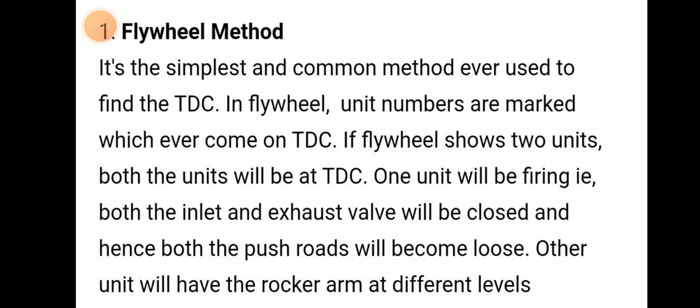The first is the flywheel method. This is the simplest and most common method used to find TDC. In the flywheel, the unit numbers are marked. Whichever unit number comes on TDC — if the flywheel shows two units — both units will be at TDC. That means one will be firing: both inlet and exhaust valves will be closed, and hence both pushrods will become loose. The other unit will have the rocker arm at a different level.